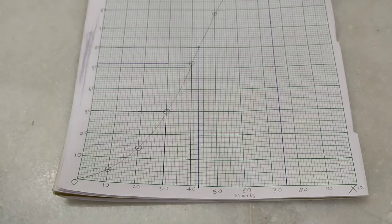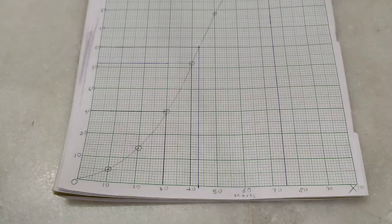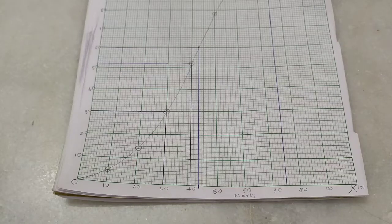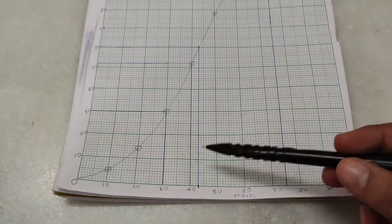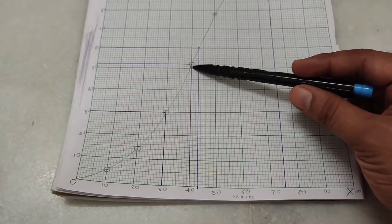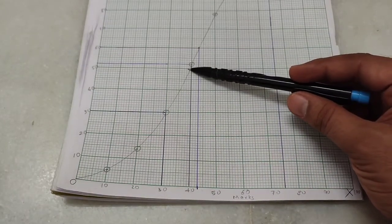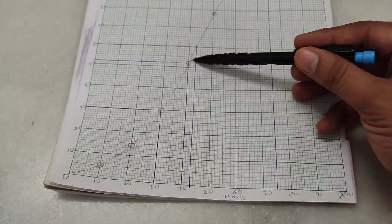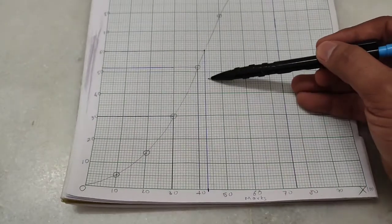Roman number three: number of students who did not pass if the pass percentage was 40. If the pass percentage is 40, that means passing marks is also 40 because it's a 100 marks paper. So 40 percent of 100 is 40. So again we'll have to start from the x-axis, and since they've asked number of students, we'll get the answer from the y-axis. So at 40 draw a line.